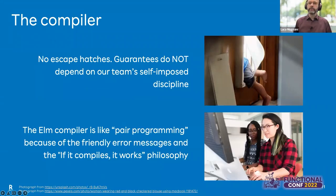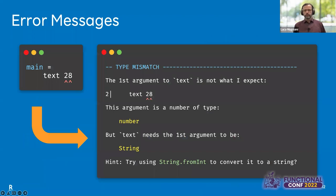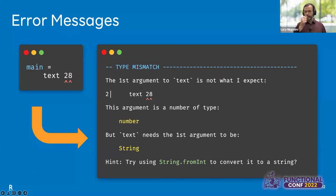Also related to the compiler: in Elm there are no escape hatches. This means that guarantees do not depend on the discipline of the team members. Moreover, the compiler's friendly errors and the concept that 'if it compiles, it works' give the impression that the compiler itself is like an assistant looking over your shoulder and guiding you while coding. This is an example of an error message in Elm: by mistake, we passed a number to a function that expected a string. The resulting error is very precise — it highlights the problem, the exact position of the problem, and it also gives in green a possible resolution. Those friendly error messages help to mitigate the feeling that types are slowing you down.